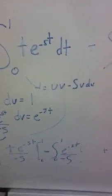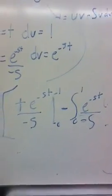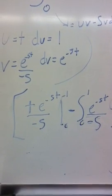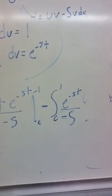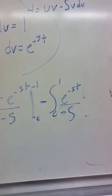And so once you solve for that, you end up getting an equation that looks like this. And you're evaluating t e to the negative st over negative s from 0 to 1. And then you also have to find the integral for that and evaluate that from 0 to 1.